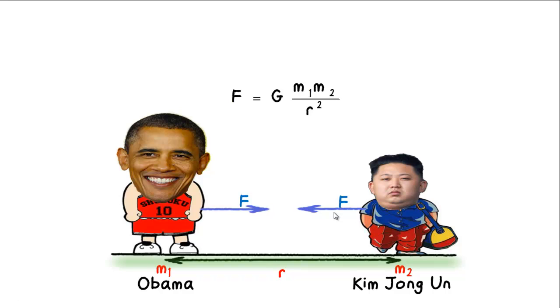So why don't we see them accelerate towards each other? Because the force of gravitation is very weak. The gravitational constant is a very small number, 6.67 times 10 to the power of negative 11. So even if Kim Jong-un is 100 kilograms and Obama is 1000 kilograms, when we multiply these three numbers up, we are still looking at just about 1 micronewton.